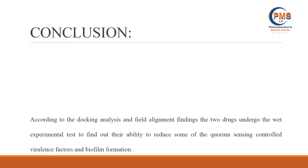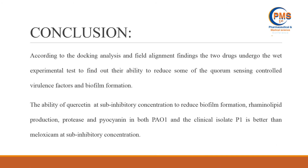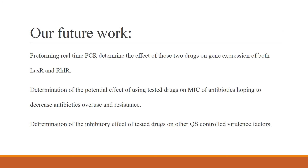In conclusion, according to the docking analysis and field alignment findings, the two drugs underwent wet experimental testing to evaluate their ability to reduce quorum sensing controlled virulence factors. The ability of quercetin at sub-inhibitory concentration to reduce biofilm formation, rhamnolipid production, protease activity, and pyocyanin production in both the reference strain and clinical isolate P1 was better than meloxicam at the same sub-inhibitory concentration. Future work will include real-time PCR to determine the effect of both drugs on gene expression of LasR and RhlR, and determination of their inhibitory effect on other quorum sensing controlled virulence factors.